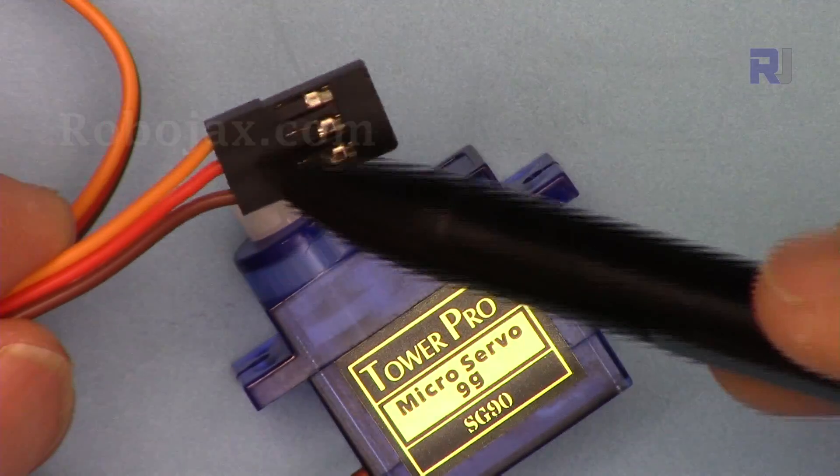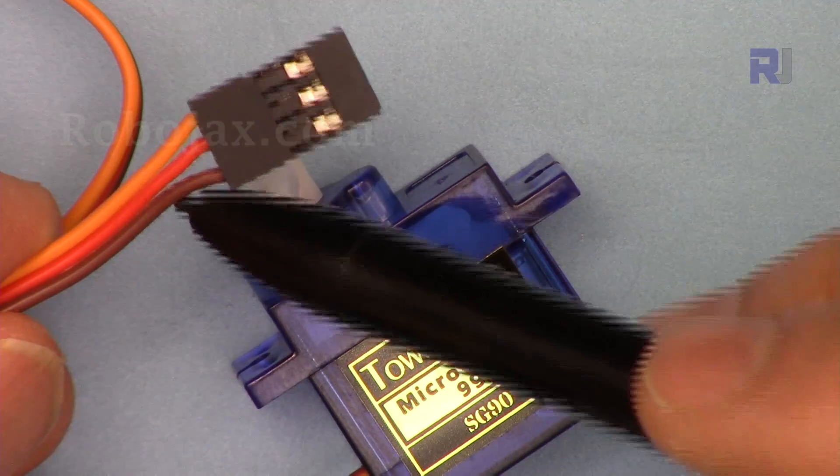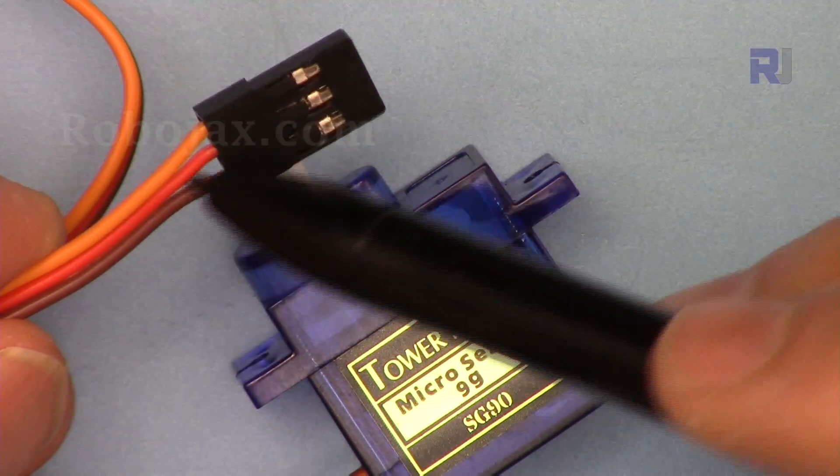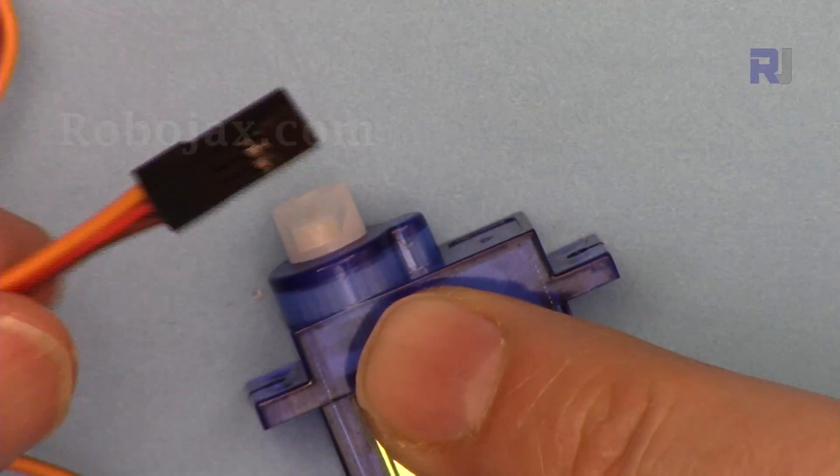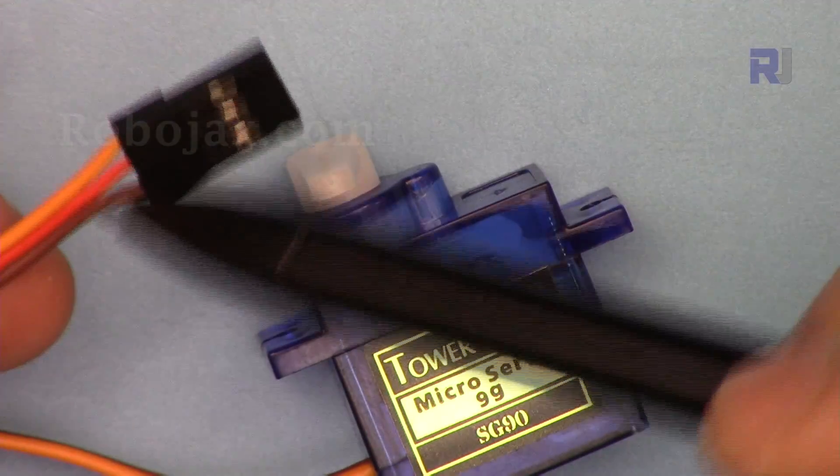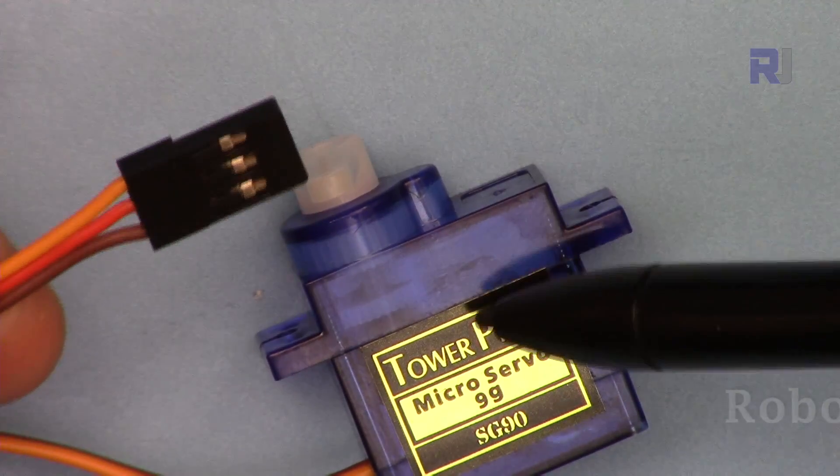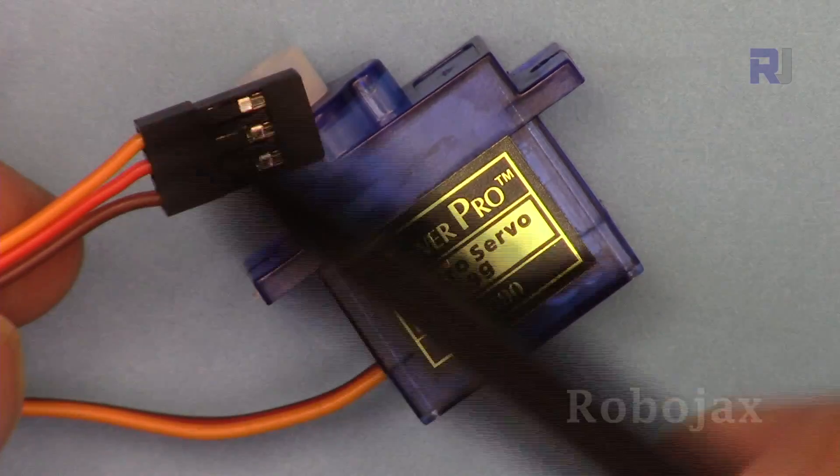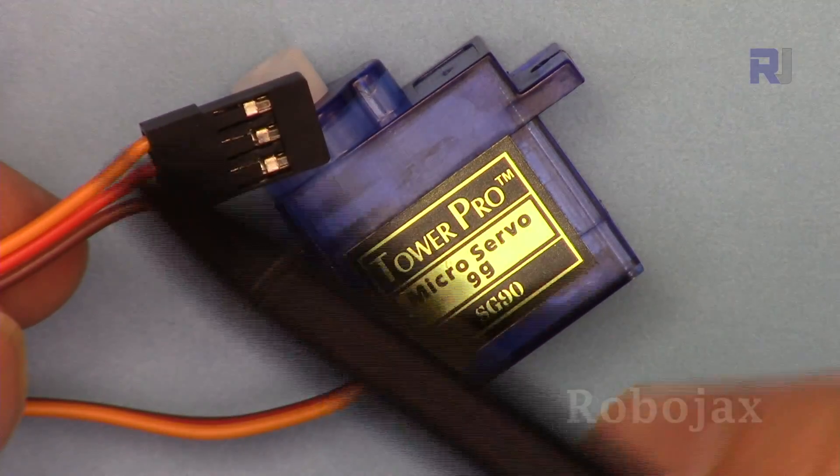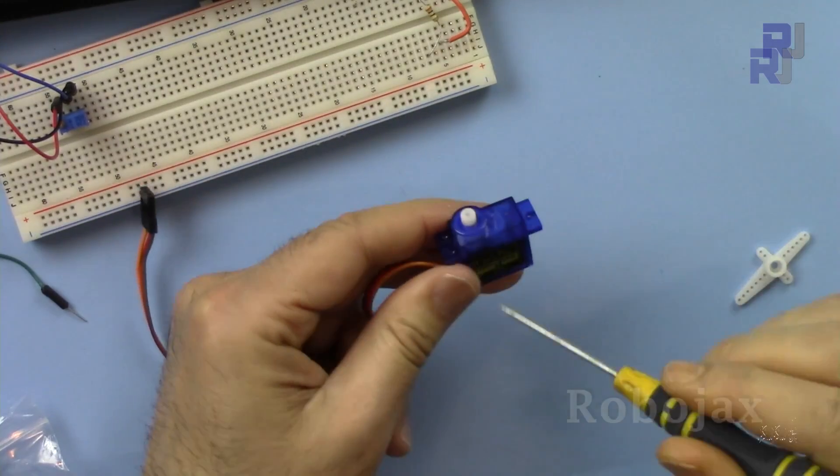This servo is five volts. The middle, this is positive. This darker color is the ground. They put the positive at the middle because even if you connect it incorrectly or insert it in different position, the middle is always positive so the device is protected against incorrect polarity. The last one is a signal that you control the servo from. You send the signal, it has a motor inside.